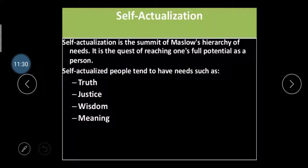The last need is self-actualization, which is the summit of Maslow's Hierarchy Need Theory. It is the quest for reaching one's full potential as a person. People at this level tend to have needs such as truth, justice, wisdom, and meaning. Examples include Sachin Tendulkar in cricket and Lata Mangeshkar in singing — these legends reached self-actualization. After this need, Maslow said a person cannot have any further need; they are satisfied with their life and their own skills and knowledge.